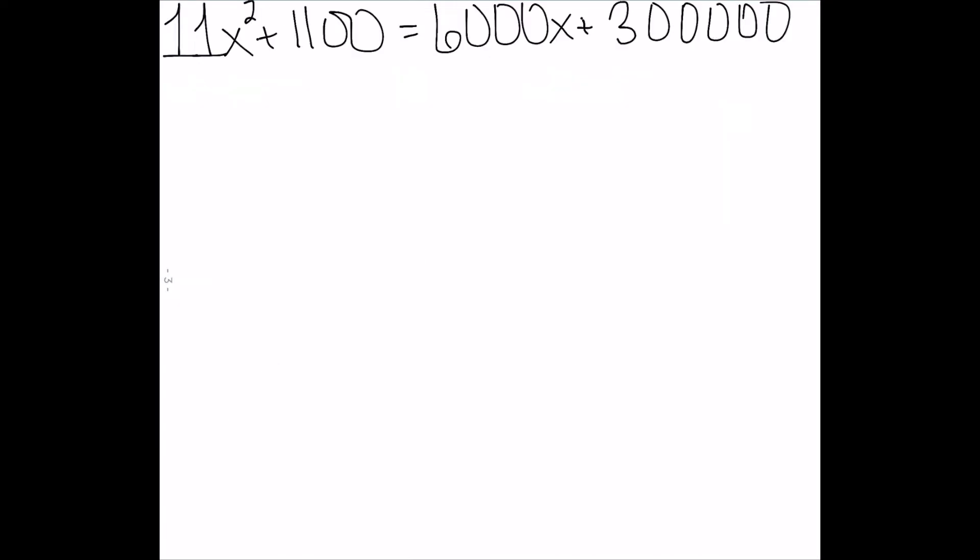Let's now look at solving this. Our first step is that we want to get all of our terms on one side, so we can either factor or use the quadratic formula. So subtract 6,000x from both sides.